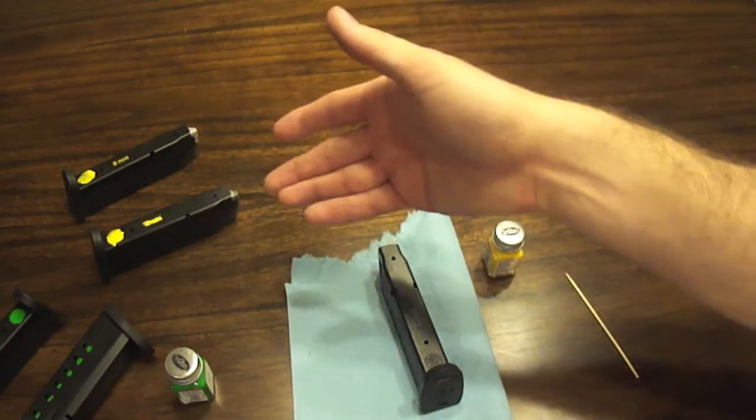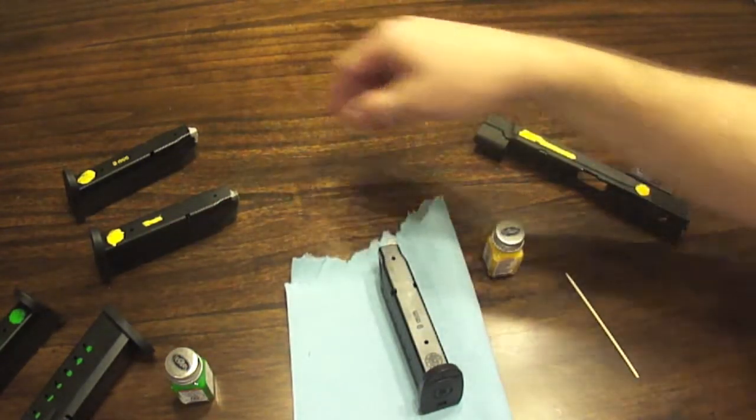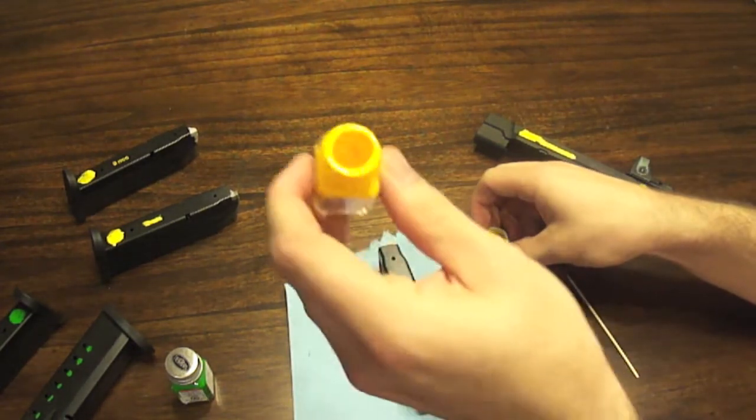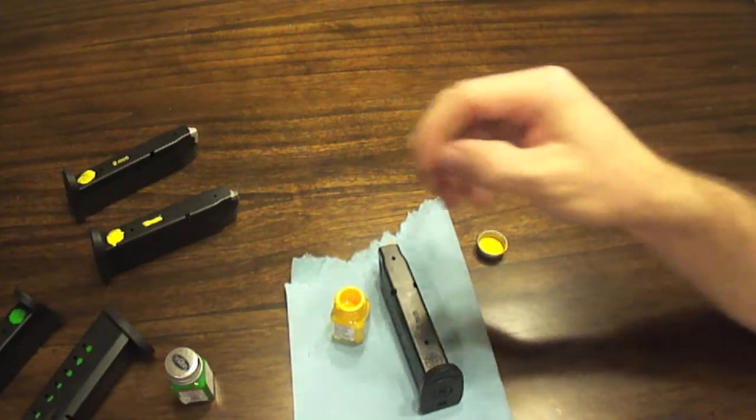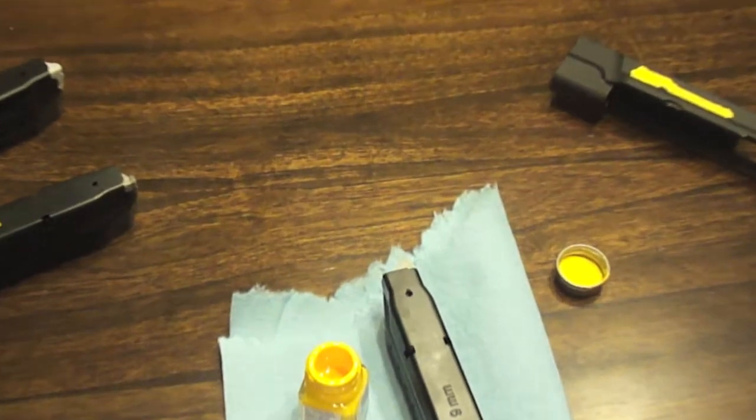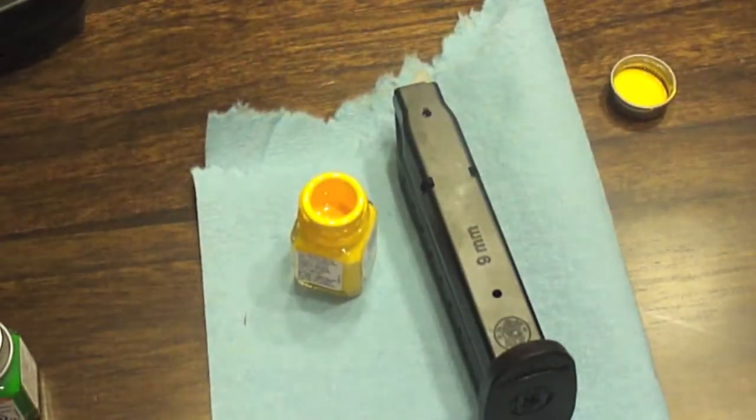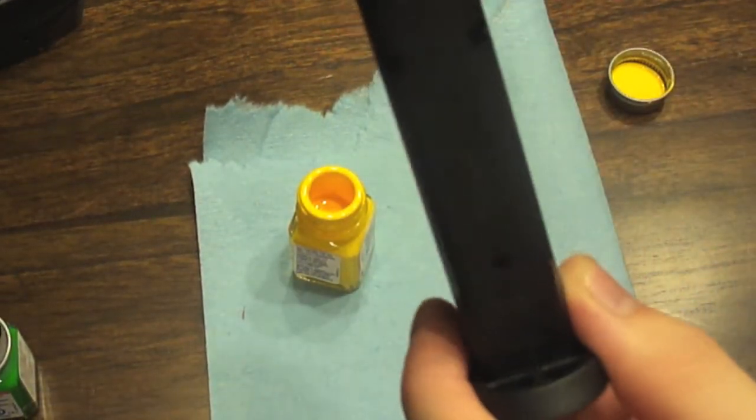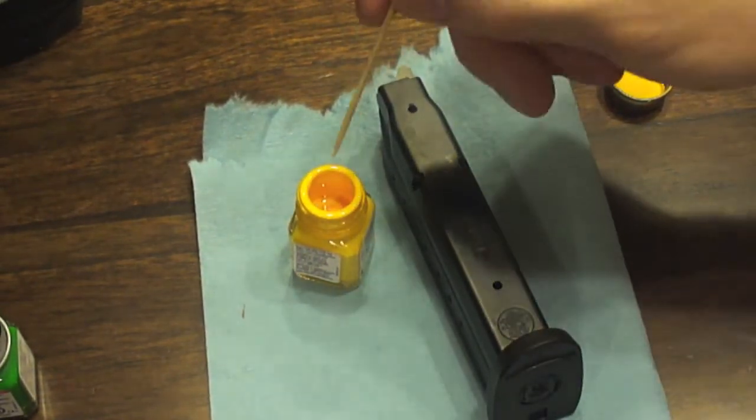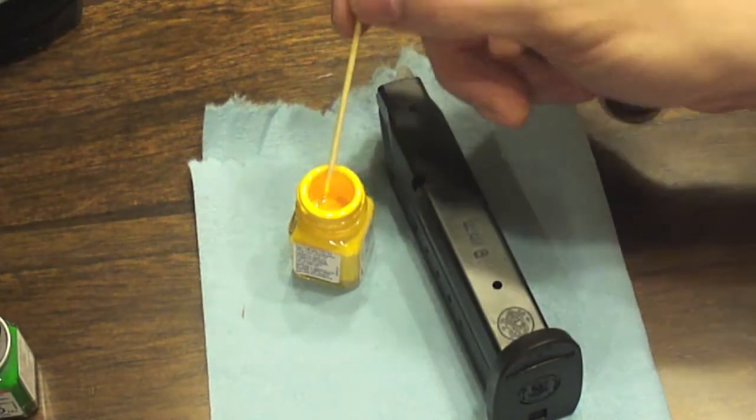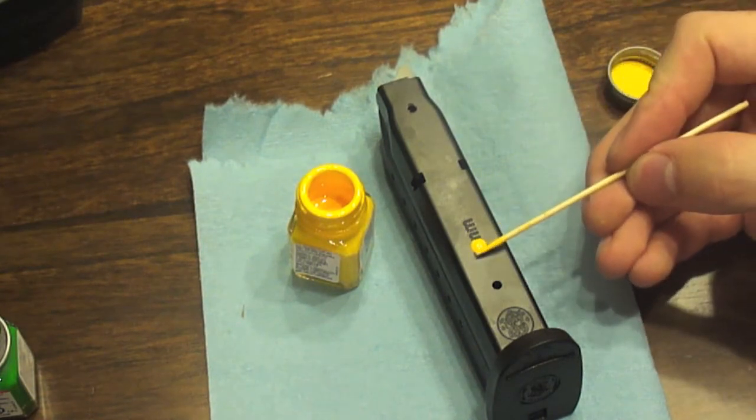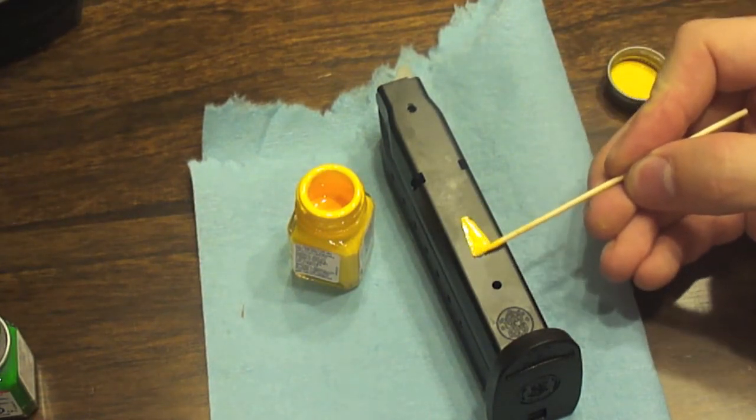Using green for the 40 stuff and yellow for the 9 millimeter stuff. The process that I saw online that was really good: shake it up first. I shook it just a second ago. Get you a little, we'll zoom here to show you what's going on. You can see here we got the lowered letters that say 9 mil and the Smith and Wesson logo.